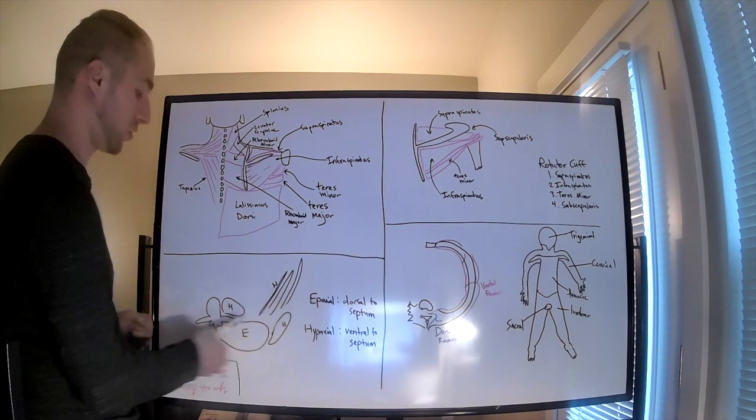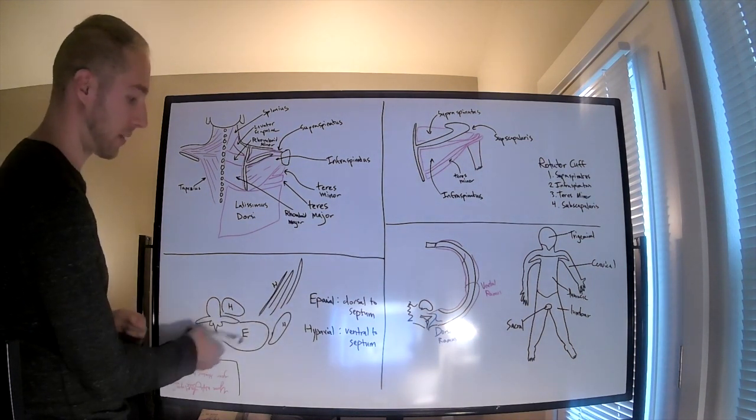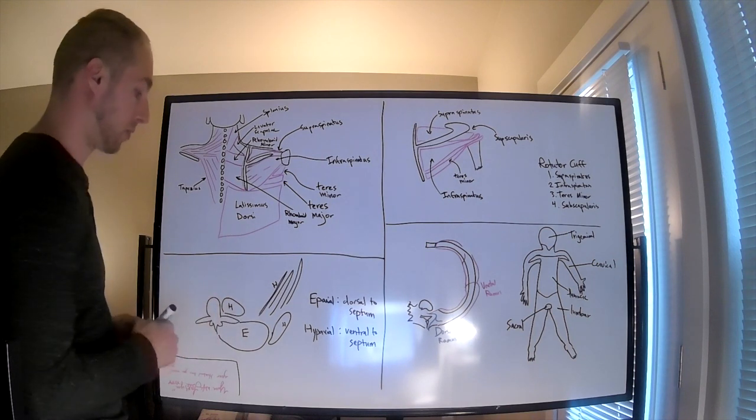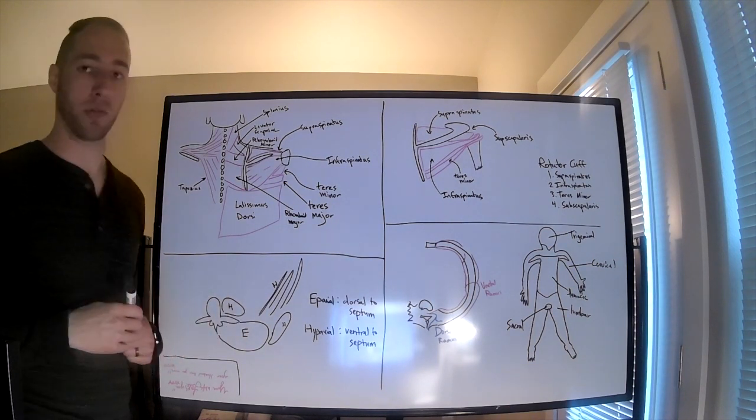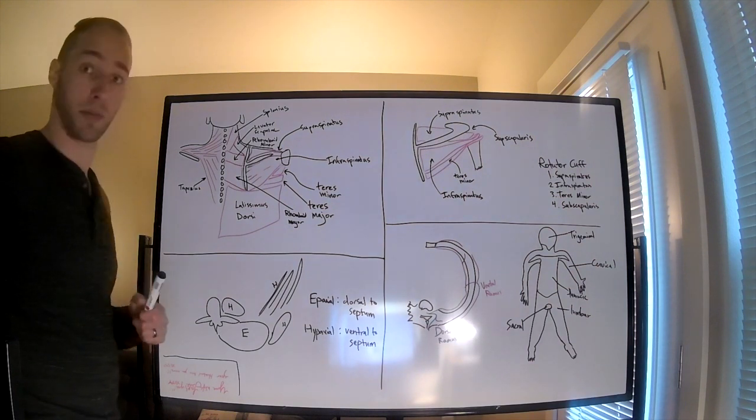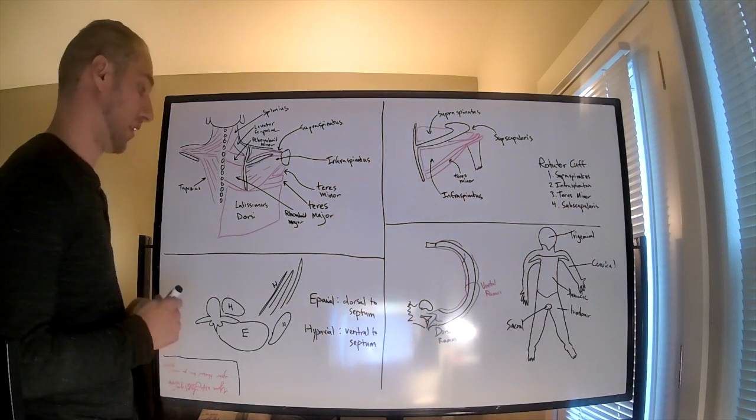Epaxial is dorsal to that transverse process septum, and hypaxial is ventral to that transverse process septum. That's important because that defines trunk muscles, true trunk muscles, versus limb muscles.